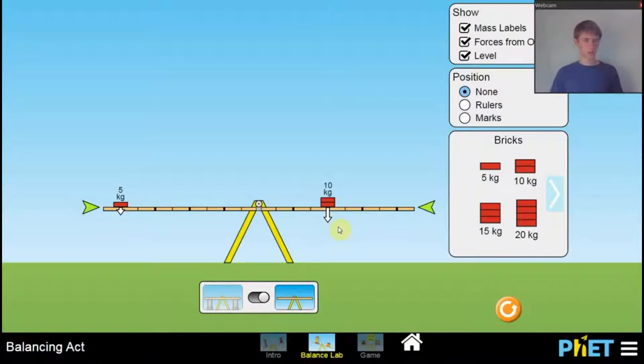Then, the second class is where you would have your fulcrum at one of the ends, and then you would have your load in the middle. So, you'd have a force going down in the middle, and then you would be pulling up on the far end, this end right here. So, you would be pulling up, the force would be pulling down, and it would pivot around this point here. That's the second class lever.